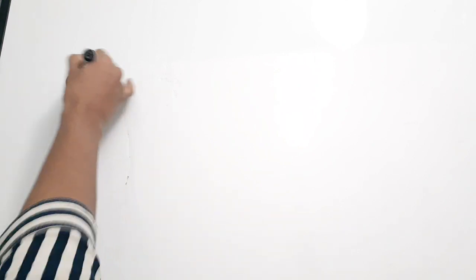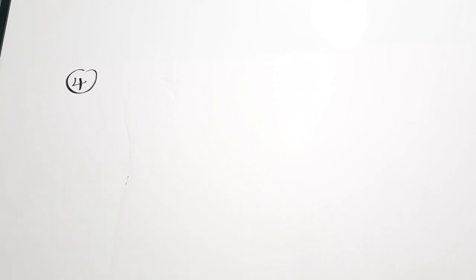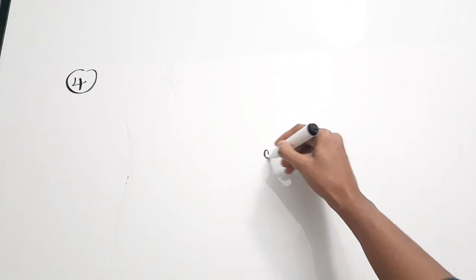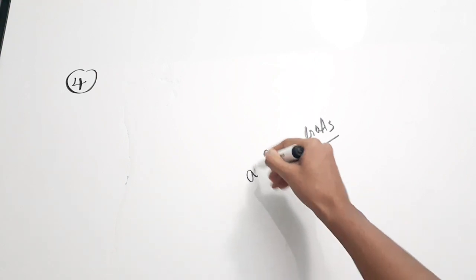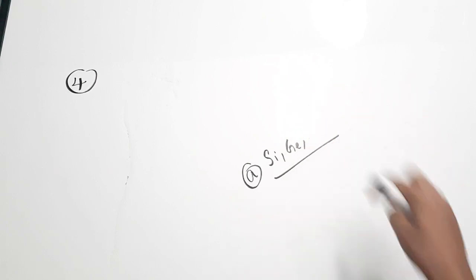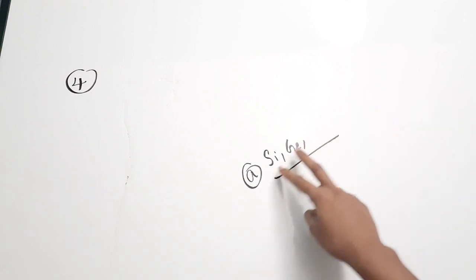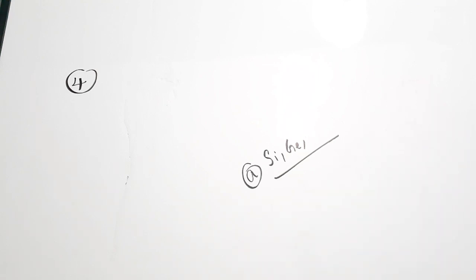Fourth question is from tunnel diodes. Tunnel diodes are made up of dash — what material is used? Options: A, germanium and silicon; B, aluminium gallium arsenide; C, aluminium gallium indium phosphide; D, zinc. The correct answer is germanium and silicon. The main materials commonly used for tunnel diodes are silicon, germanium, and gallium arsenide. From the options given, the correct answer is option A, silicon and germanium. If all three — silicon, germanium, and gallium arsenide — were given as one option, you would choose that.